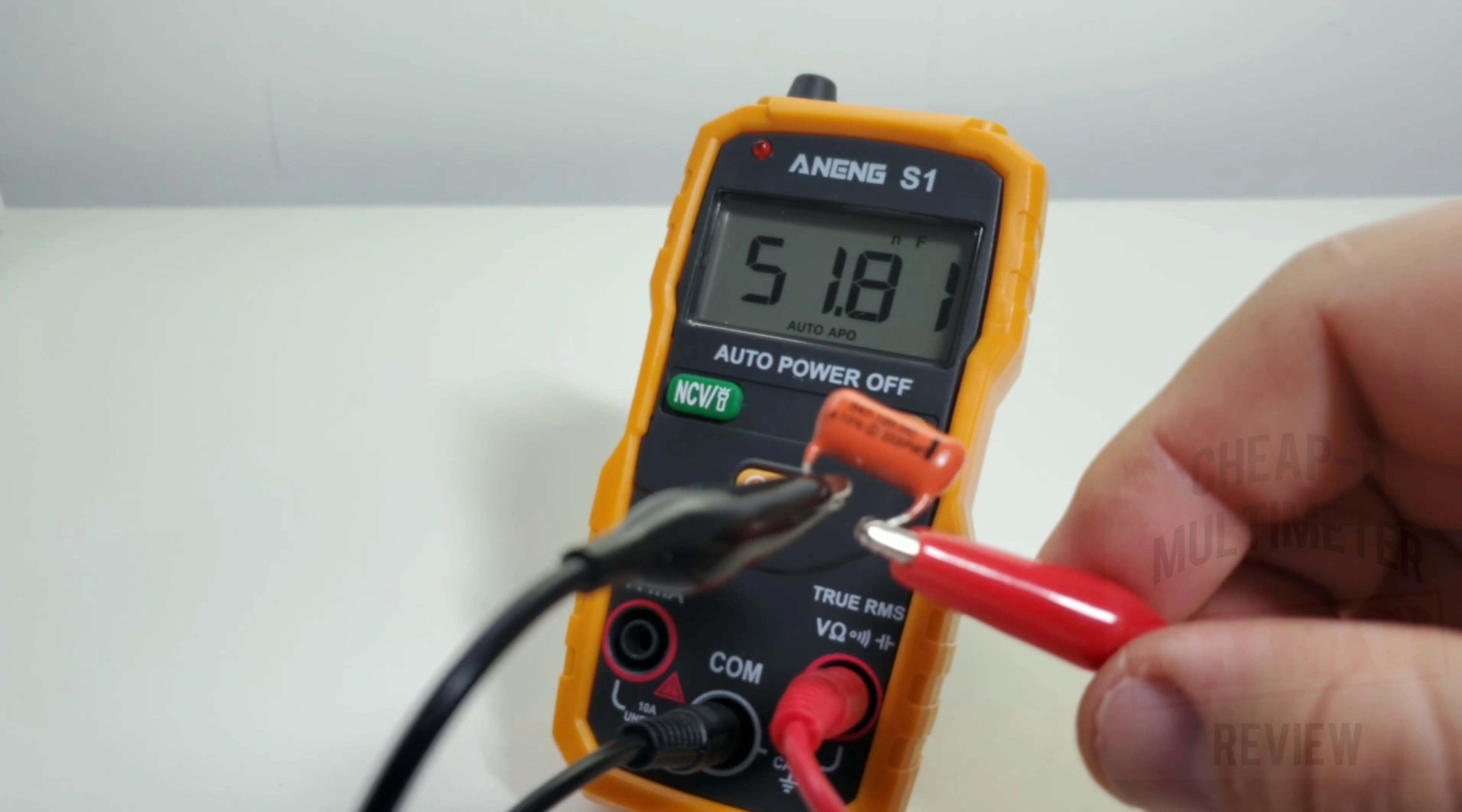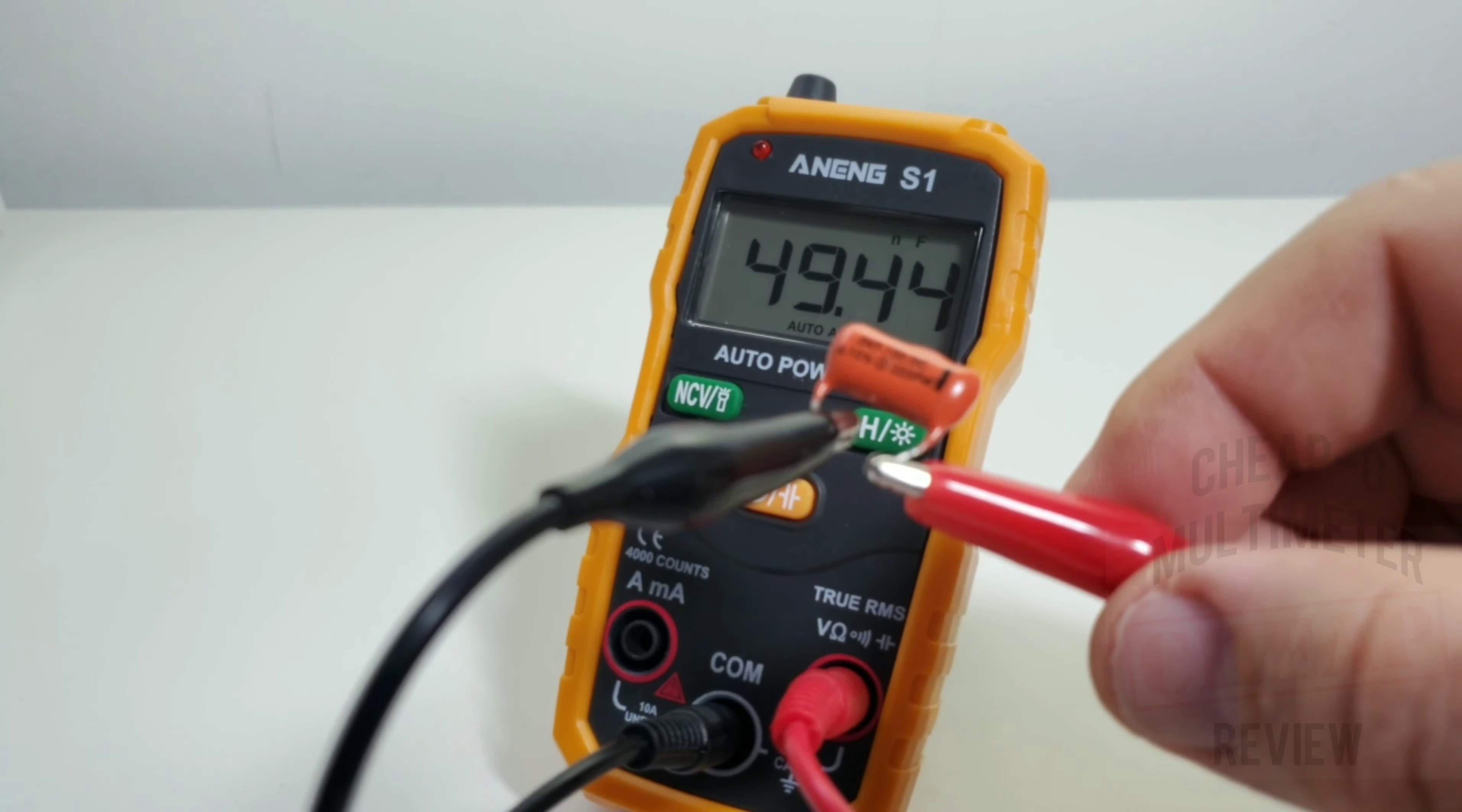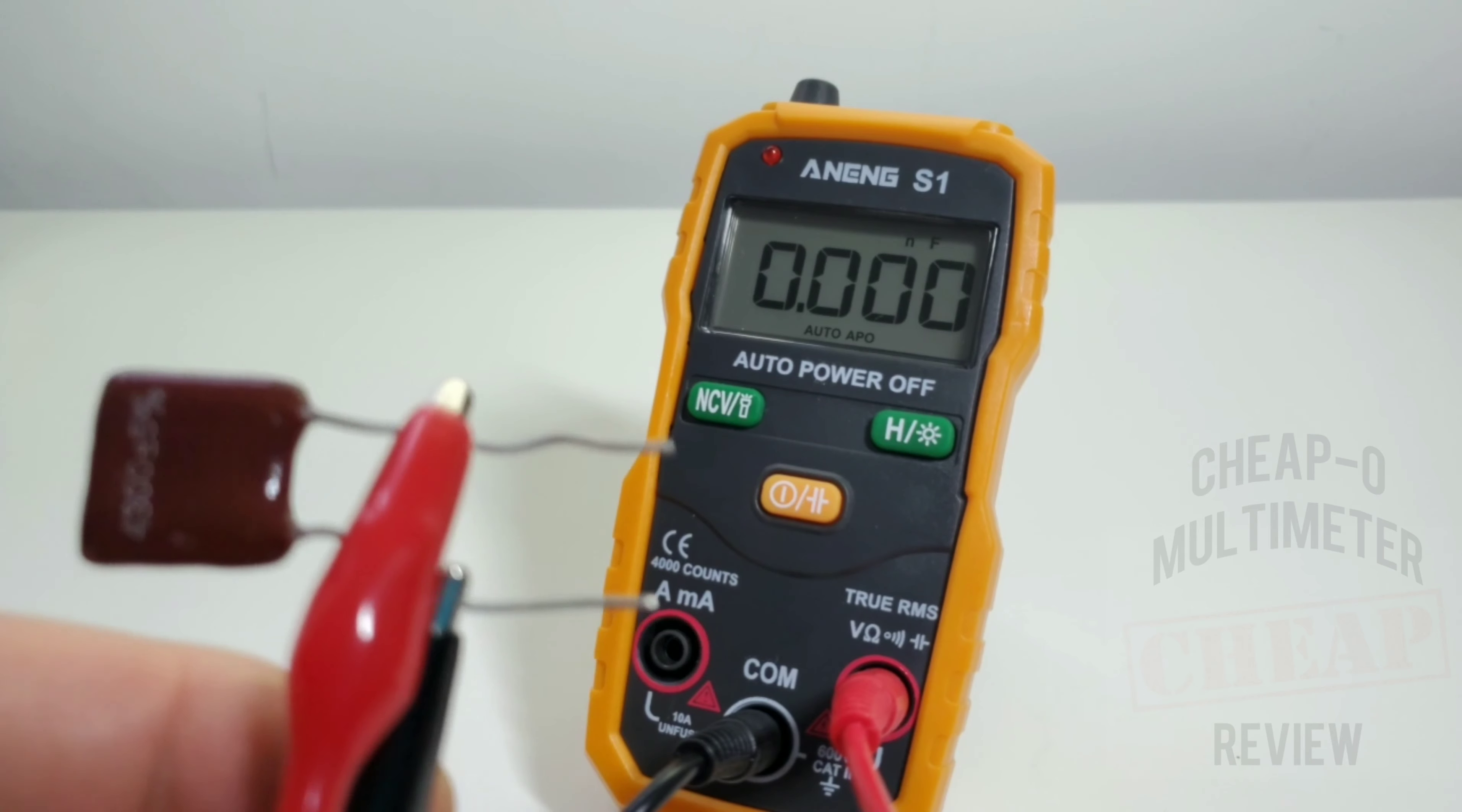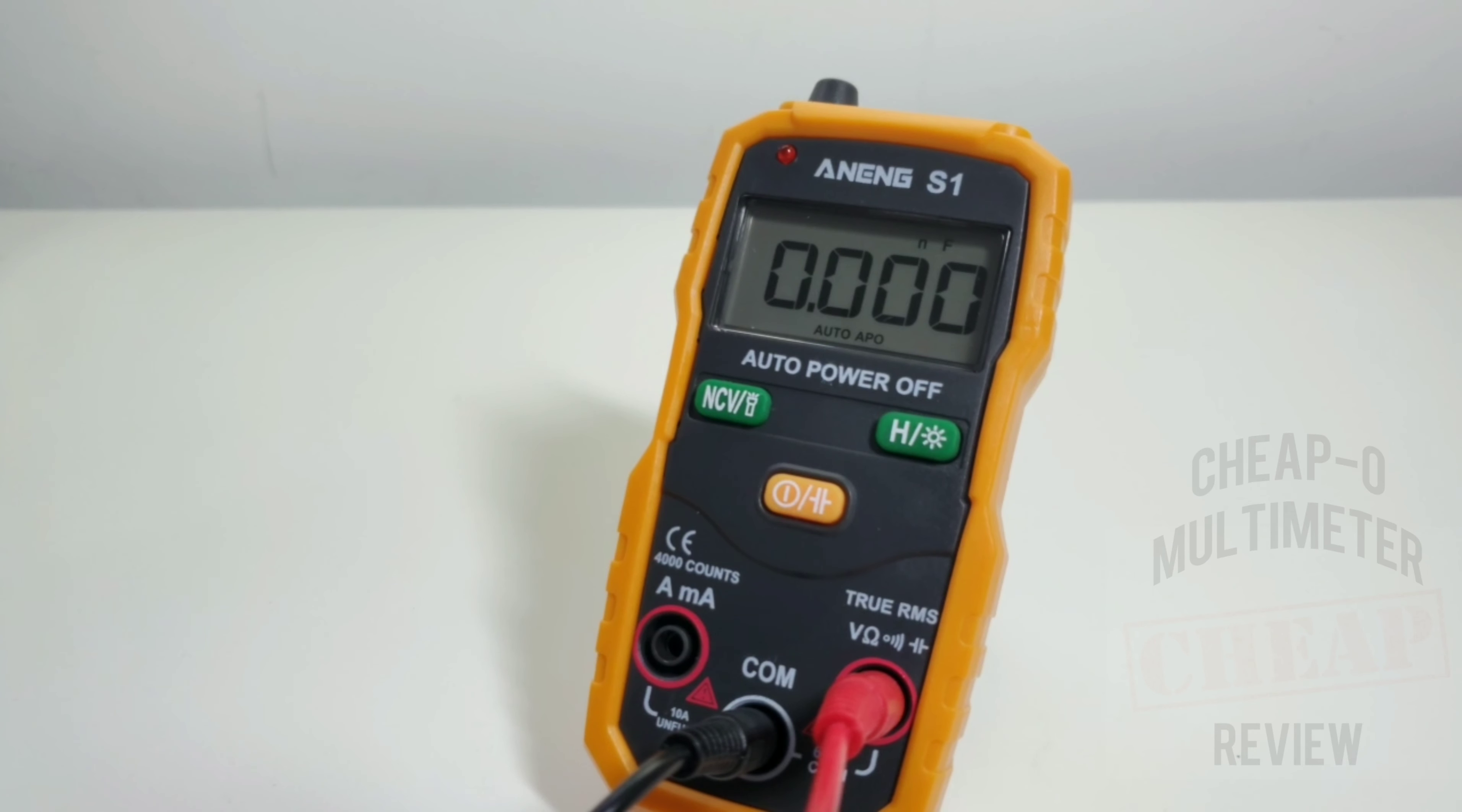47 is what we want to see or something close to it. And look at that, 51.81. And actually 51 was the same reading that the X-tech LCR meter was giving me earlier, so looking good, looking good. I did try a smaller cap, 4.3 nanofarad, to no avail, so 20 nanofarad thereabouts is the minimum threshold in capacitance range.